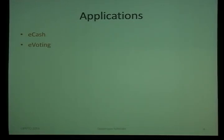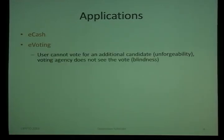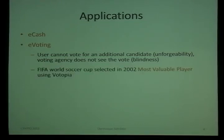Another application is voting, where the idea is that the user cannot vote for several candidates — he cannot sell his vote to vote for multiple candidates. On the other hand, the voting agency doesn't see which person I'm voting for. There is a real-world application: in 2002, FIFA selected the most valuable player in the FIFA World Soccer Cup using Votopia, and Votopia actually used a blind signature scheme.